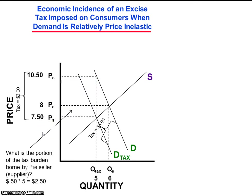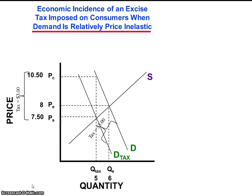The portion of the economic burden of the tax borne by sellers is much smaller. It is the equilibrium price P-E, or $8, minus the effective price realized by sellers P subscript S, or $7.50 — which is $0.50 — times the quantity in the taxed market of 5, yielding $2.50. The portion of the tax borne by sellers is the lower, unshaded, and much smaller rectangle.